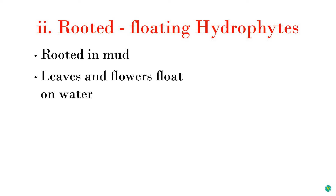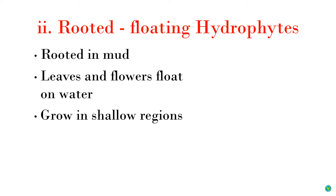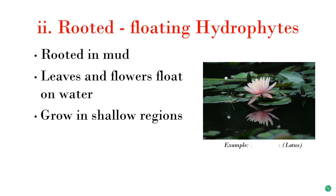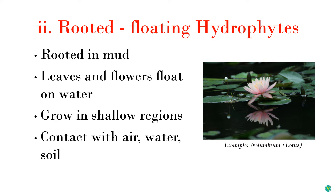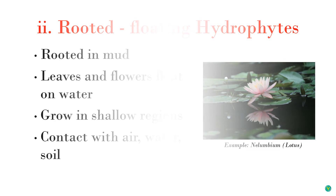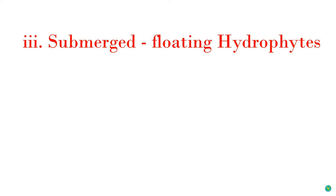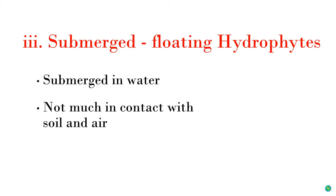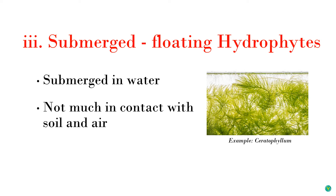Rooted floating hydrophytes generally grow in shallow water regions where the depth of water is not much, and they get in contact with air, water, and soil. The next type is submerged floating hydrophytes: these plants are completely submerged in water and don't get in contact with soil or air. An example is Ceratophyllum.